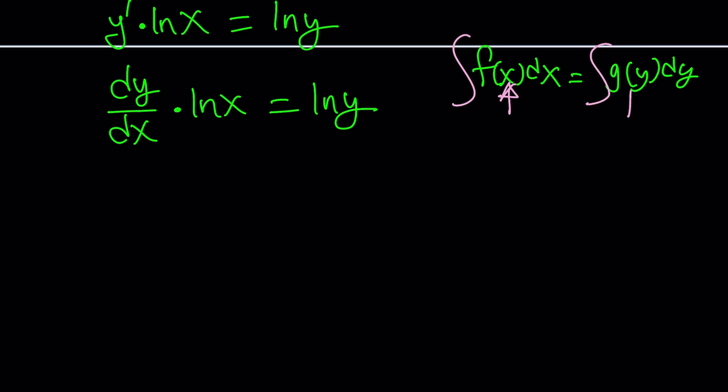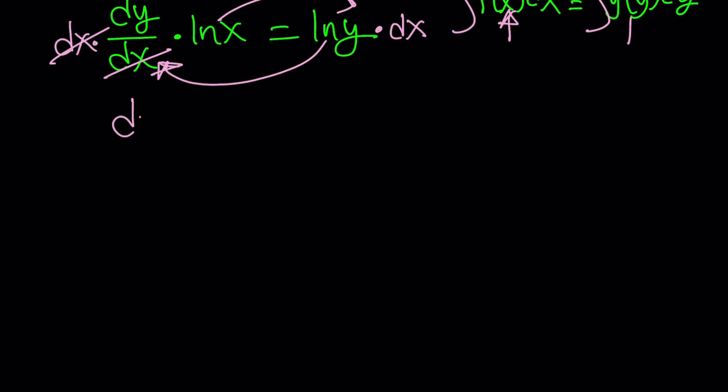So let's go ahead and divide by ln y, multiply by dx. Some people say, oh, you can't multiply by dx. You know what? This is a fraction, and yes, I can. So we're going to multiply by dx, and then we're going to go ahead and divide by ln y, and then divide by ln x. So at the end, this is what it's going to look like. dy over ln y equals dx over ln x.